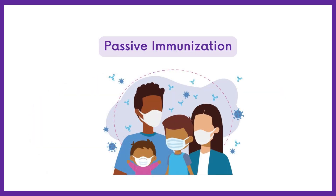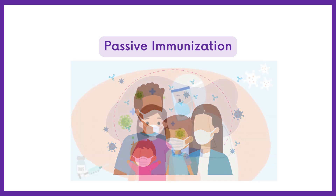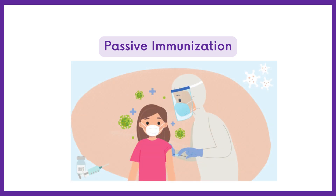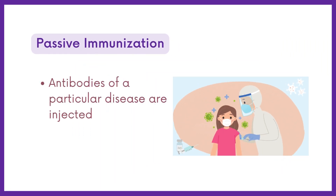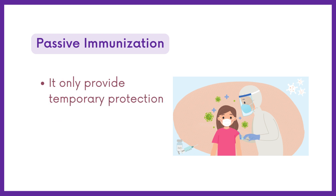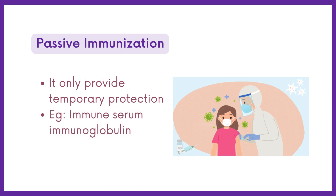In passive immunization, instead of injecting organisms, ready-made antibodies of a particular disease are injected. It only provides temporary protection, such as immune serum immunoglobulin.